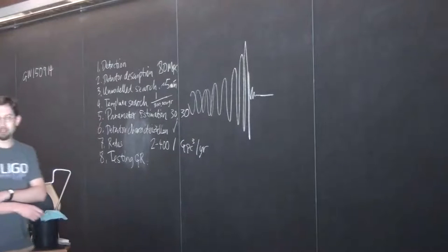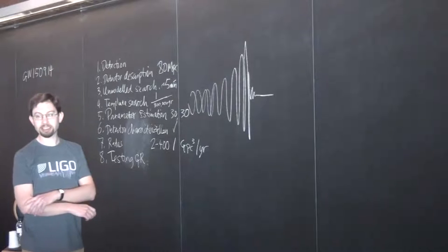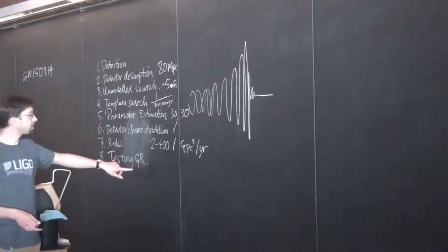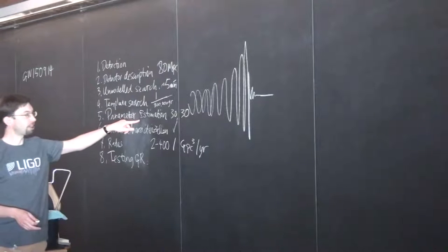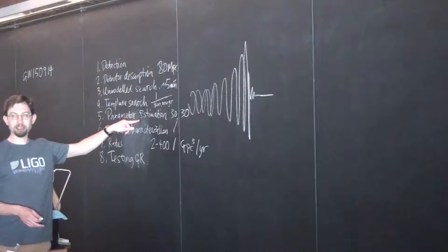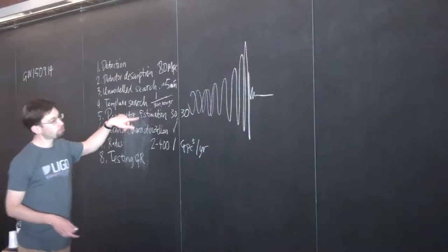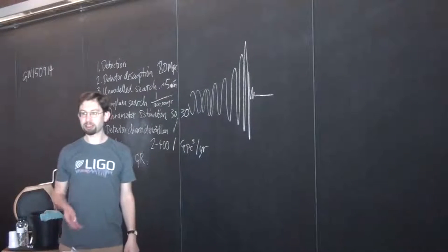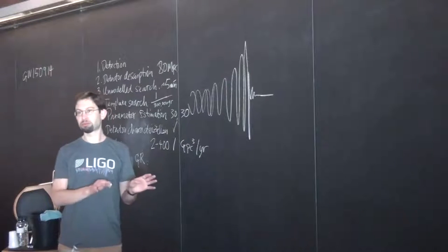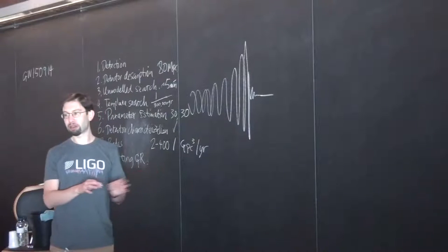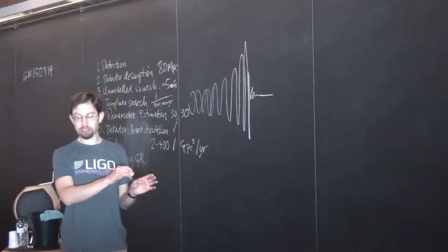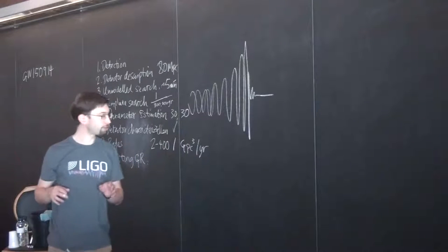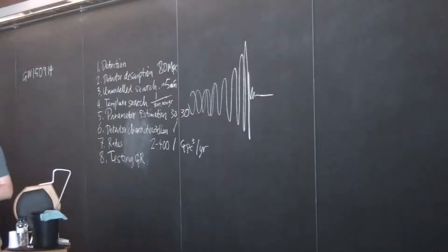You don't know at the beginning the system parameters. You have to account for the fact that you don't know exactly the masses. You have to account for—this dephasing could be caused by a change in the masses or a change in the spins. You have to rule out that whatever change you're seeing could be caused by the masses or by the spins. If not, then it could be caused by some deviation from the GR predictions.